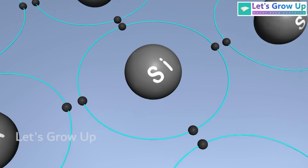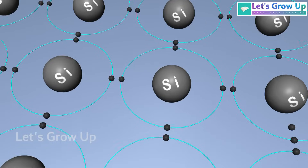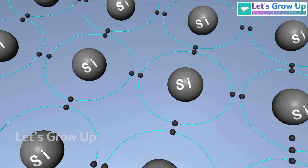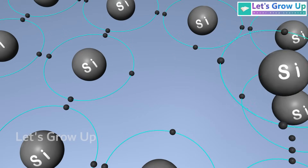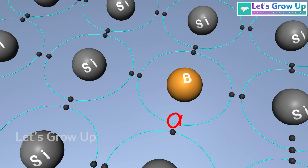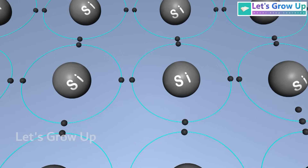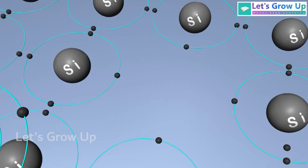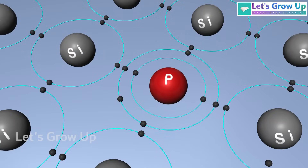For the p-type layer, silicon is doped with atoms like boron, which has one less electron than silicon. When boron atoms replace some silicon atoms in the crystal lattice, they create holes — locations where electrons are missing. These holes are positively charged and form the p-type layer.